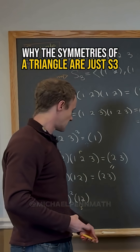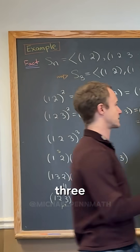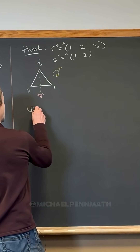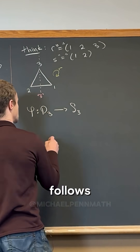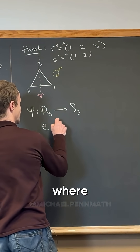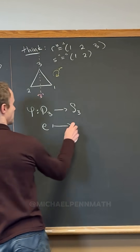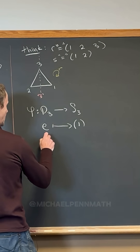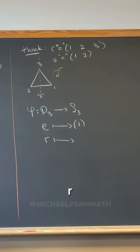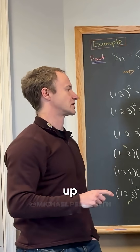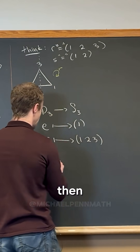This motivates an isomorphism between D3 and S3. Let's define phi going from D3 to S3 as follows: the identity has to go to itself — so to one. Then where does r get sent? Based on our motivating picture up there, r must be sent to the cycle (1 2 3).